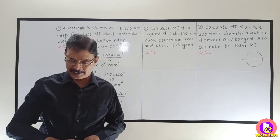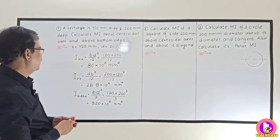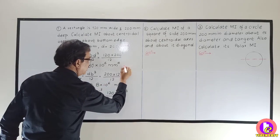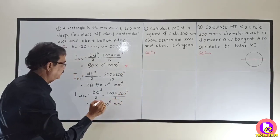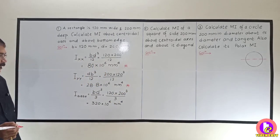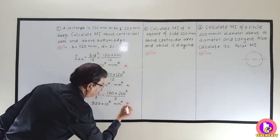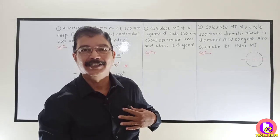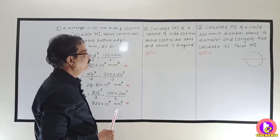So this was a very straightforward problem in which you have to use the standard formulae. We calculated IXX = BD³/12, then IYY = 28.8 × 10⁶ mm⁴, and the Moment of Inertia about the base. Please make a habit to highlight the answers.